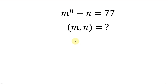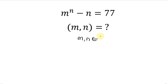Let's solve this math question that says: find the values of m and n for which m to the n minus n is equal to 77. There is a condition attached to this question that says both m and n are natural numbers.